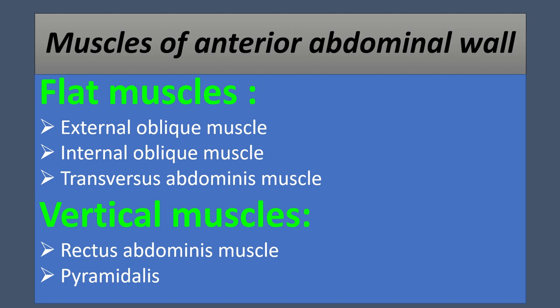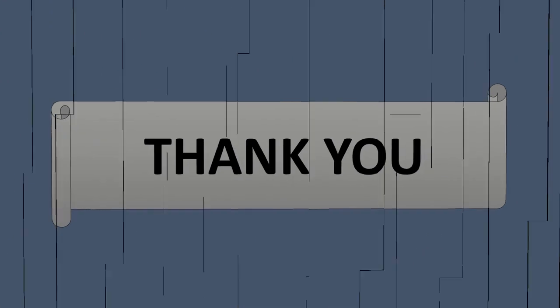To review the muscles of the anterior abdominal wall: the flat muscles are the external oblique muscle, internal oblique muscle, and transversus abdominis muscle. On the other hand, the vertical muscles are the rectus abdominis muscle and pyramidalis muscle. Thank you.